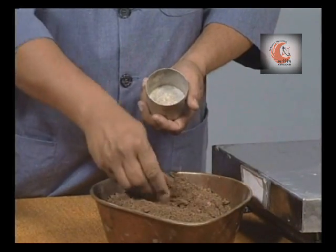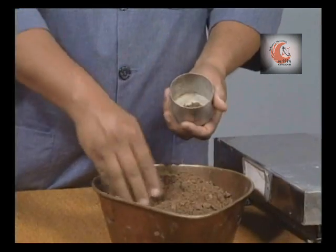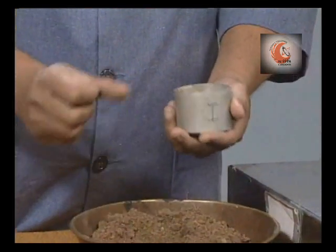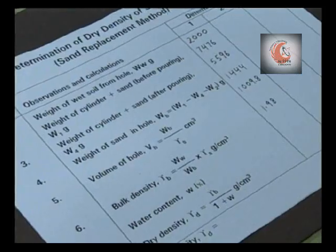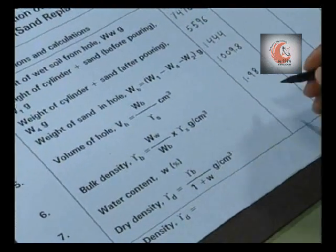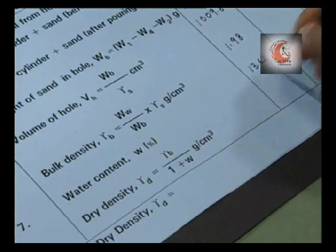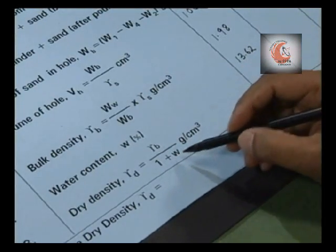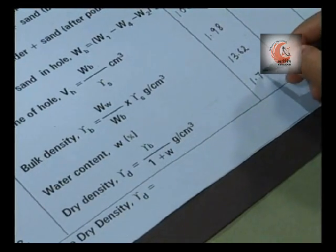Take a small soil specimen for moisture content determination as per standard procedure. Water content of this soil is 13.62%. Dry density is the ratio of bulk density divided by 1 plus water content. So for this soil, it is 1.744 grams per centimeter cube.